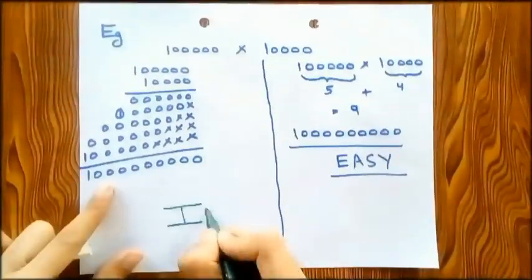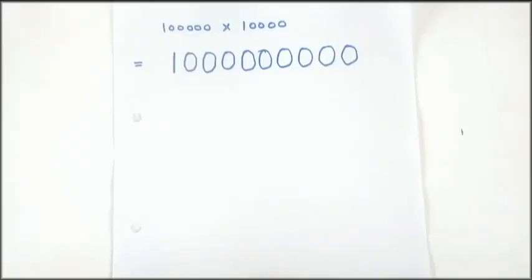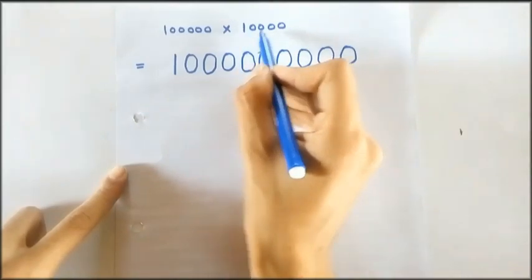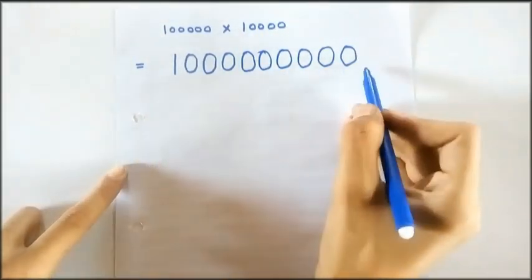And from here, the idea of logarithm came in. And for understanding log, let's look at the example we did at the start. That was 1 followed by 5 zeros and 1 followed by 4 zeros is equal to 1 followed by 9 zeros.